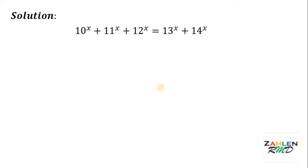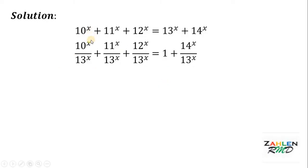The key to answering this problem is to divide all terms by 13 raised to x. Now if we do that, we get 10 raised to x over 13 raised to x, plus 11 raised to x over 13 raised to x, plus 12 raised to x over 13 raised to x, equals 1 plus 14 raised to x over 13 raised to x.